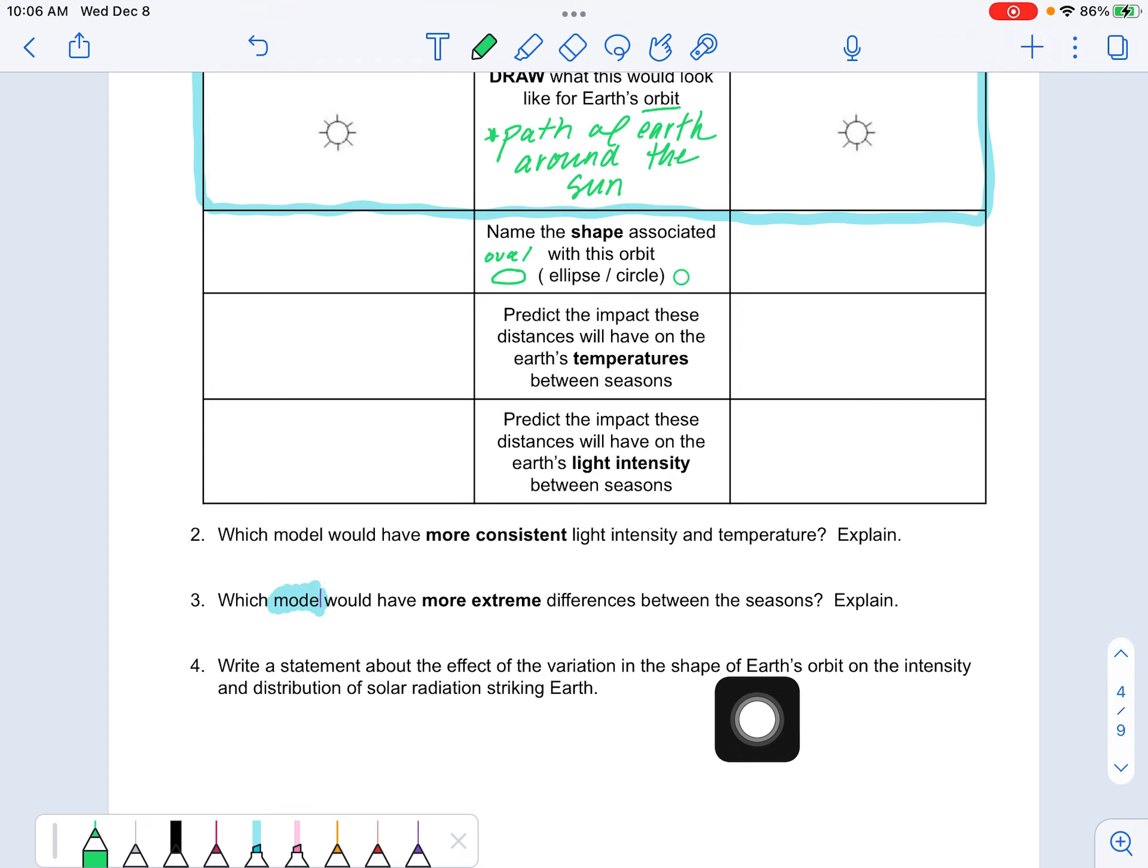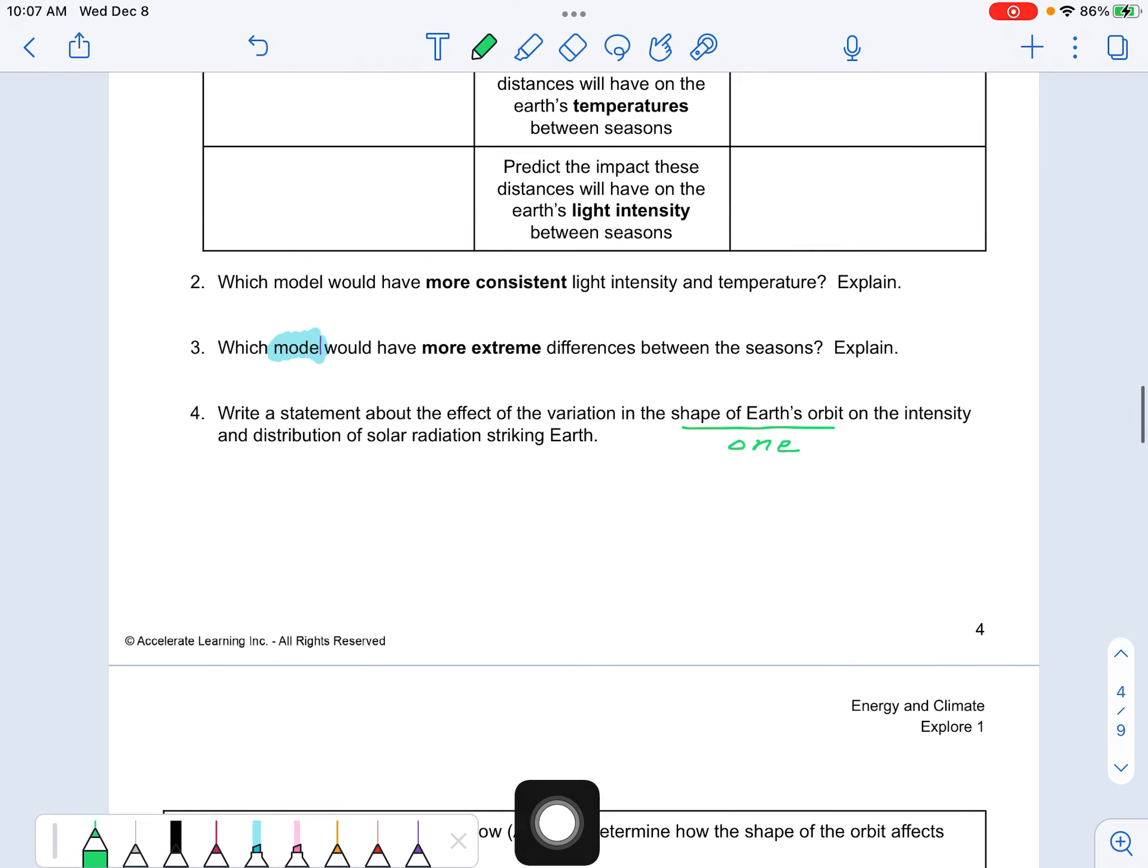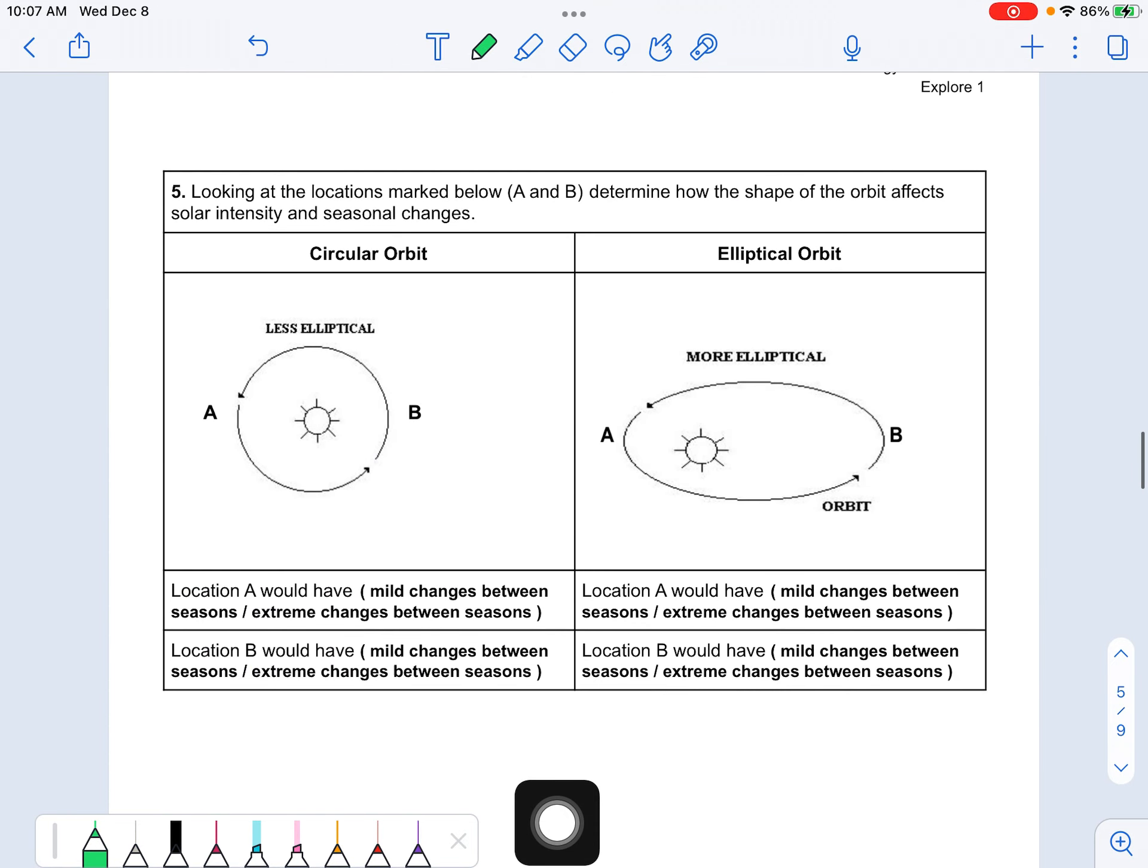When the orbit is more circular, here's what I notice about intensity and solar radiation. When the orbit is more elliptical, here's what I notice. So pick one, right? Pick one of those to talk about. And remember, this is an explore. So if you're feeling like, I'm not sure, you know, just go back to your observations. What did you notice, right? What are you observing? And then you're just explaining it out, connecting the dots, okay?